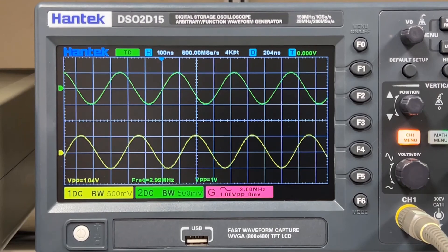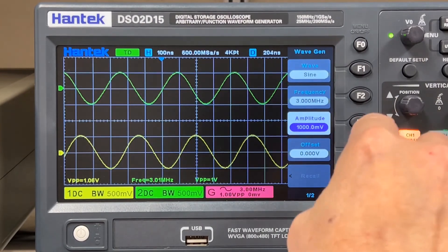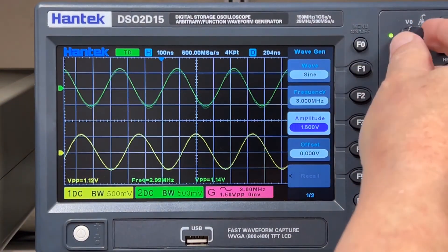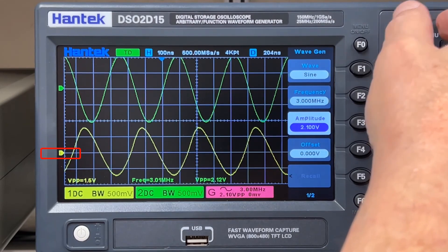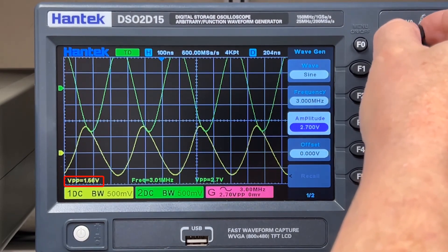Now I'm inputting a 3 megahertz sine wave input at 1 volt peak to peak. I consider that a small signal. Now let's see what amplitude causes us a slew limit. Just 1.5 volts peak to peak distortion occurs.